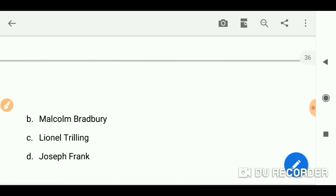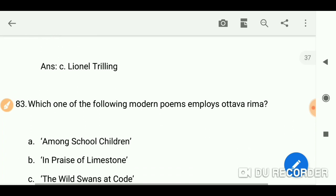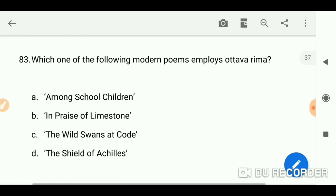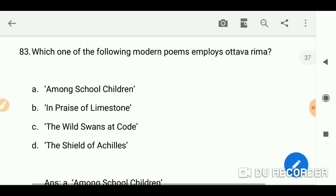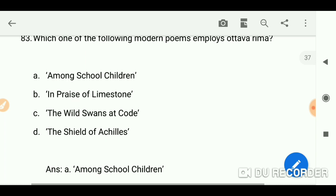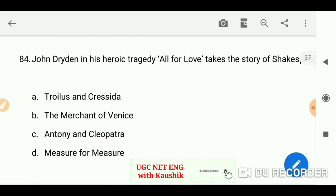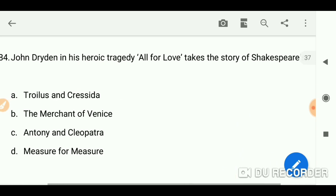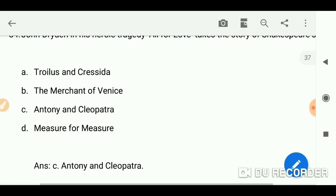Which one of the following modern poems employs ottava rima? Among School Children. John Dryden in his heroic tragedy All for Love takes the story of Shakespeare's Antony and Cleopatra.